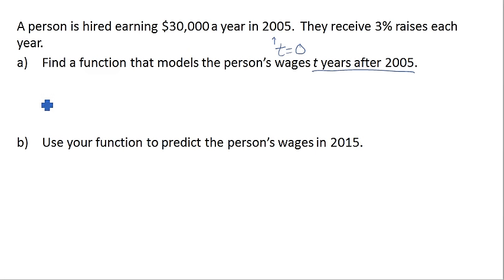So we can write an equation for the wages as—again, this is going to be exponential, so it's going to have that a times 1 plus r to the t type equation. So the a, remember, is the starting amount. In this case, in the beginning, at time 0, we got 30,000.